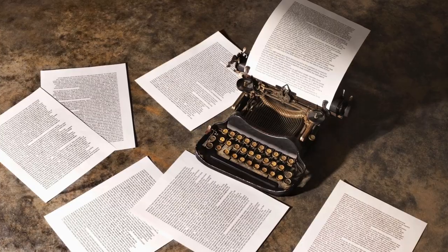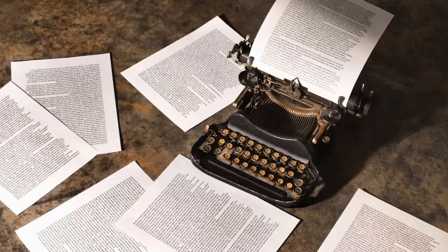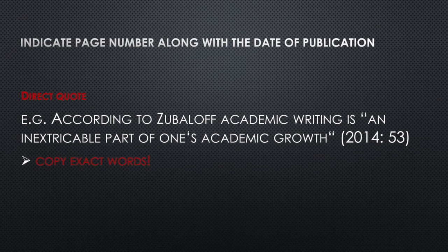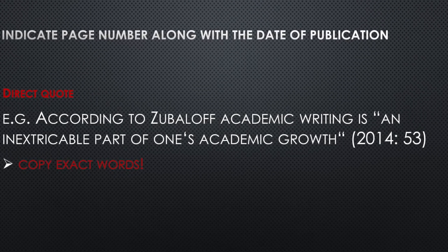So far, so good. The next question is: when do I have to indicate the page number of the work I've used? Page numbers of the relevant quote should be given for direct quotes. For example, 'according to Zubalov, academic writing is an inextricable part of one's academic growth' — with quotation marks, you copy the exact words Zubalov wrote in his 2014 paper. You are not allowed to change anything printed on paper — you just copy the exact words. This is called a direct quote.